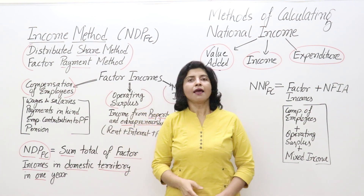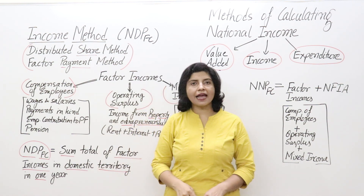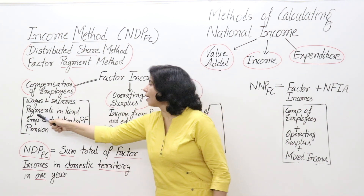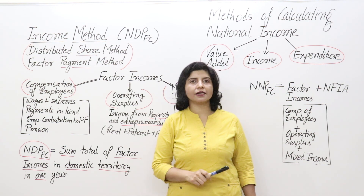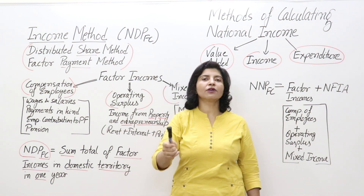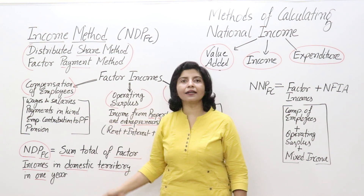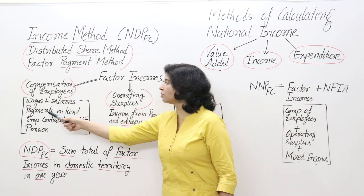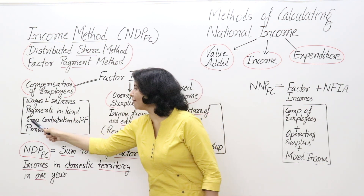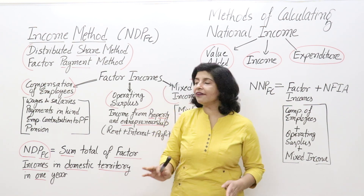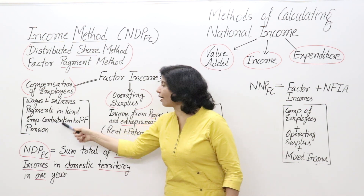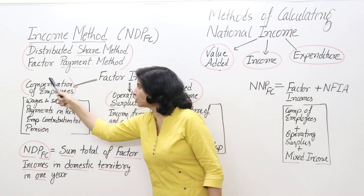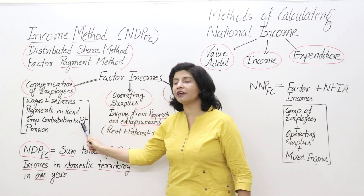Compensation of employees is what we receive in return for our services. For example, a college employee gets a salary and a maid gets wages. It also includes payments in kind — like defense personnel receiving free accommodation, ration, and commuting services, or corporate employees getting flats. It further includes employees' contribution to provident fund and pension received at retirement. So components are: wages and salaries, payments in kind, employees' provident fund contribution, and pension.